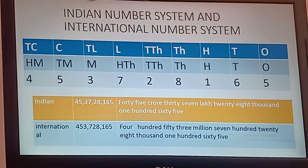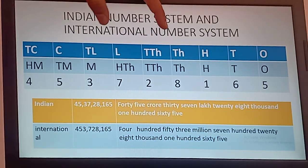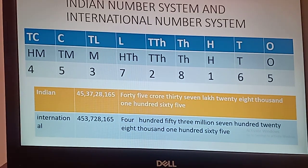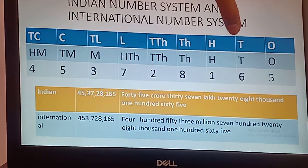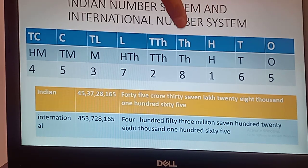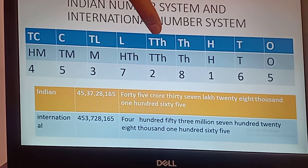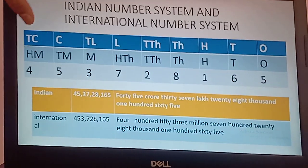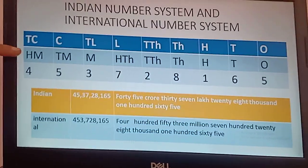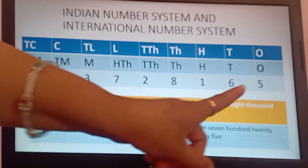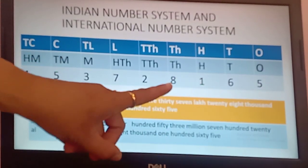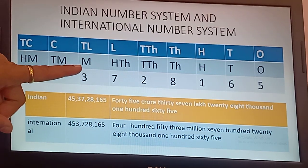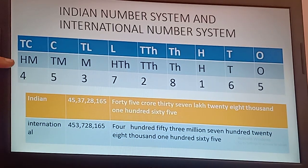Indian number system and international number system — in Indian number system the place values are: ones, tens, hundreds (ones group); thousands, ten thousands (thousands group); lakh, ten lakh (lakh group); and crore, ten crore. In international number system: ones, tens, hundreds, thousands, ten thousands, hundred thousands (ones and thousands groups); million, ten million, hundred million.